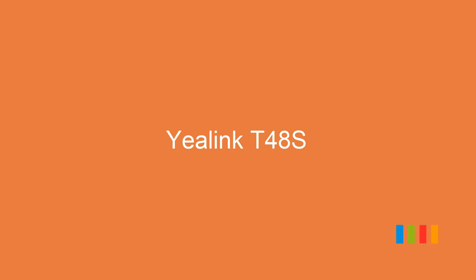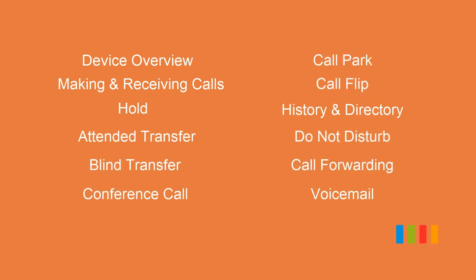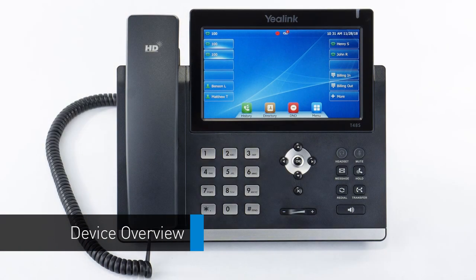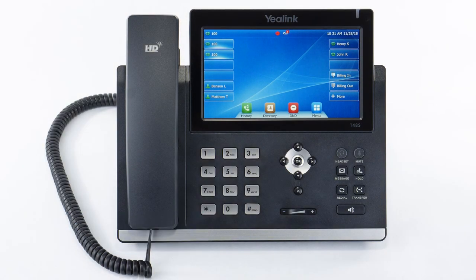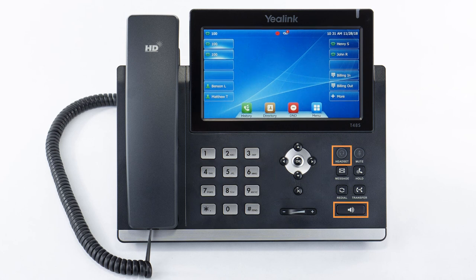This is the Yealink T48S. In this video we will go over the device features and some commonly used functionality to get you up to speed with your new phone. When you first set up your phone, take a few minutes to familiarize yourself with the hardware and button locations. On the left is your handset, and on the right is your display screen and keypad. Next to the keypad you will see additional buttons for quick access to different features of the device, such as your navigational arrow keys, headset and speakerphone buttons, and physical mute, hold, and voicemail buttons.